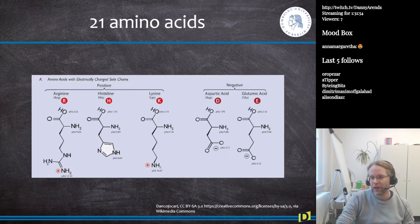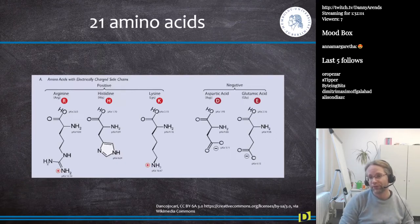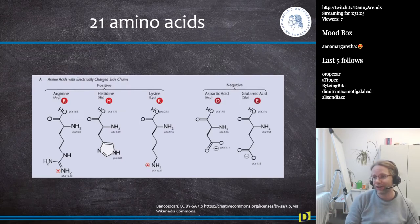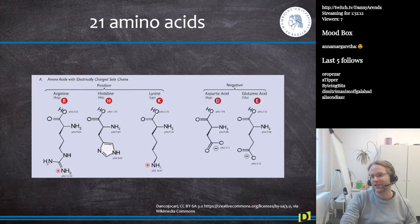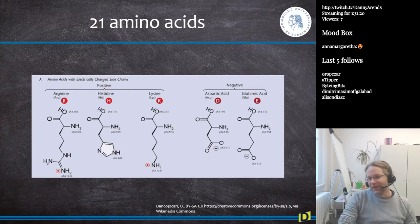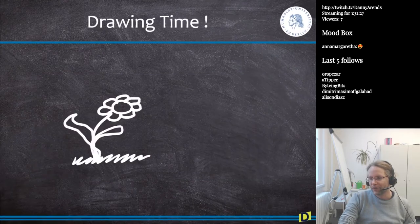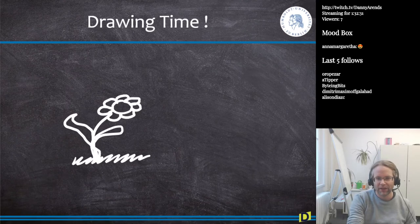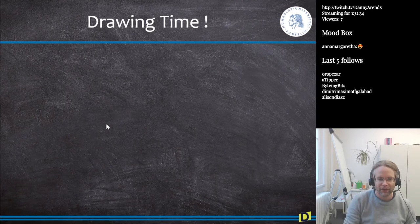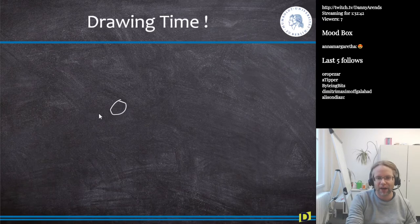A viewer redeemed a digital sketch reward, having saved up 2000 channel points. The request is for a guinea pig drawing, which the lecturer acknowledges is one of the hardest things to sketch.